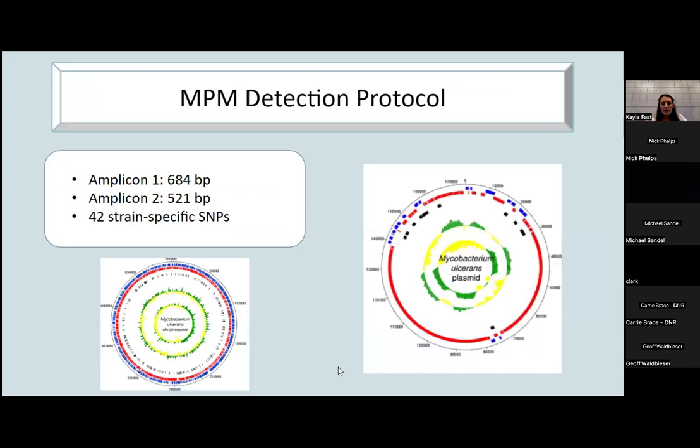So as Kayla said earlier about our NPM detection protocol, I'll just give a little background that mycolactone is encoded on the bacterial plasmid. This detection protocol is sequencing a portion of that plasmid, which allows us to detect the NPMs and define that specific ecovar.